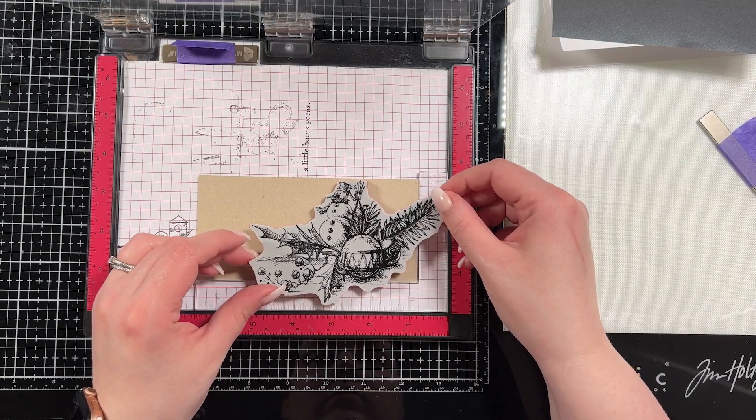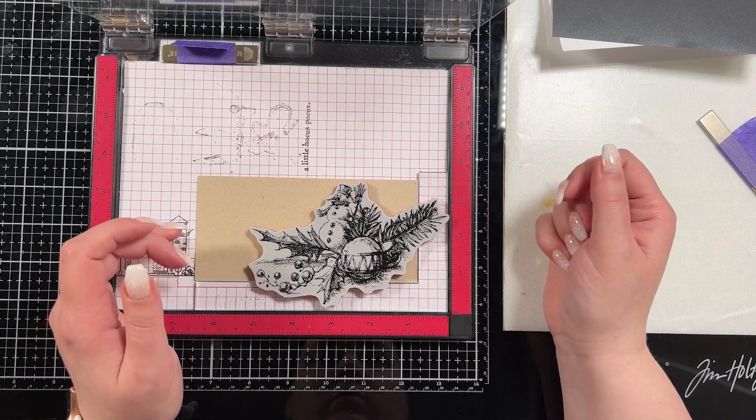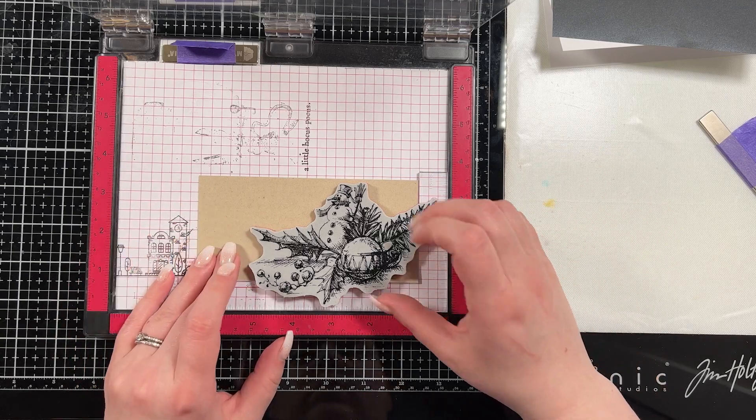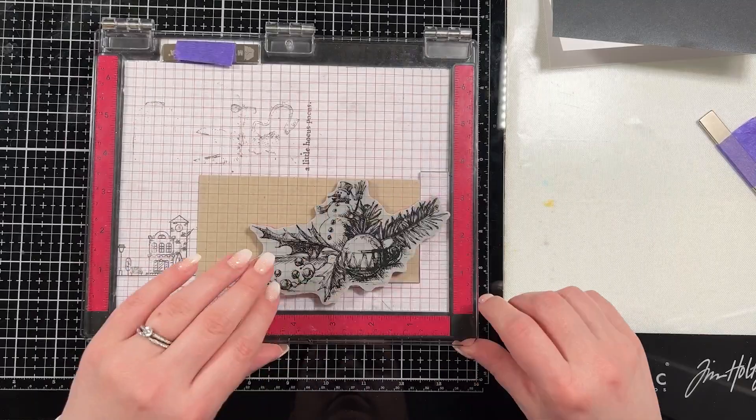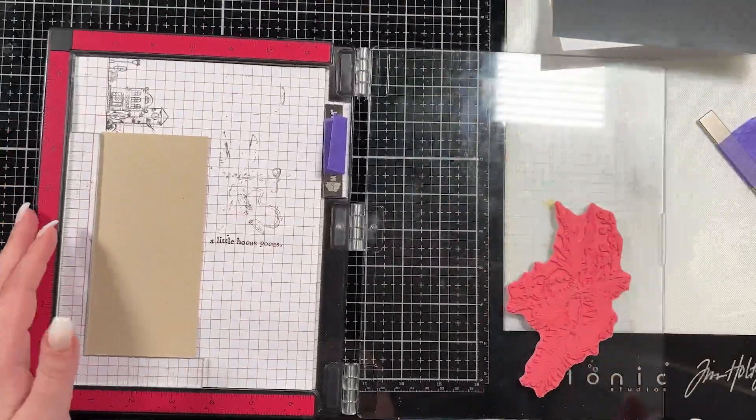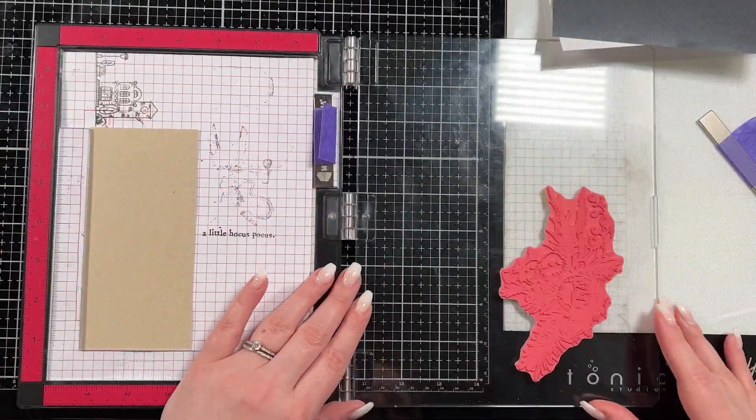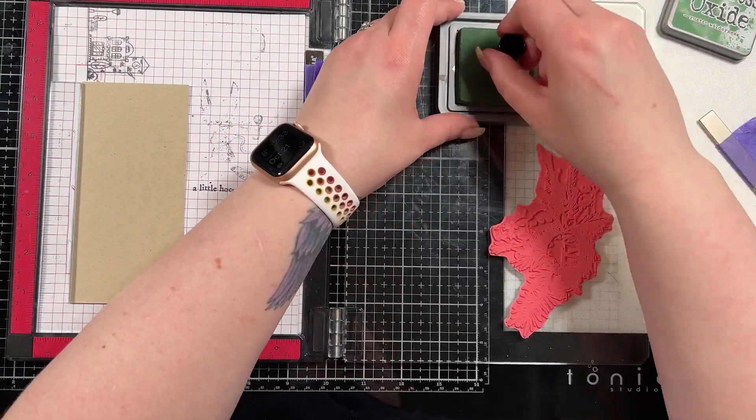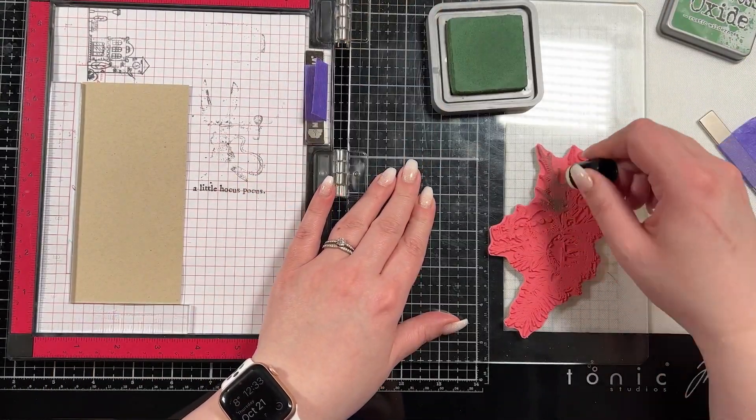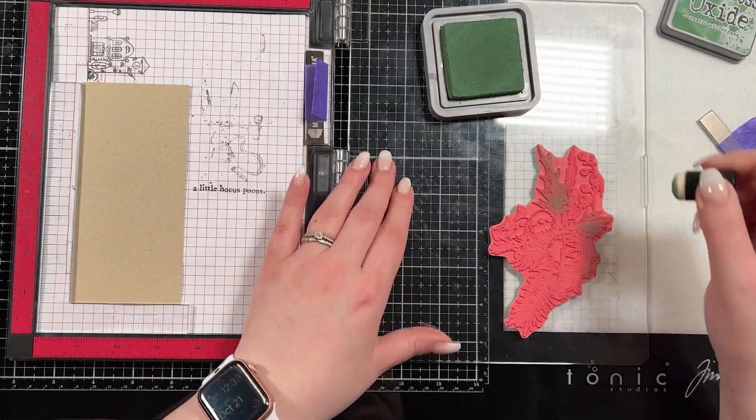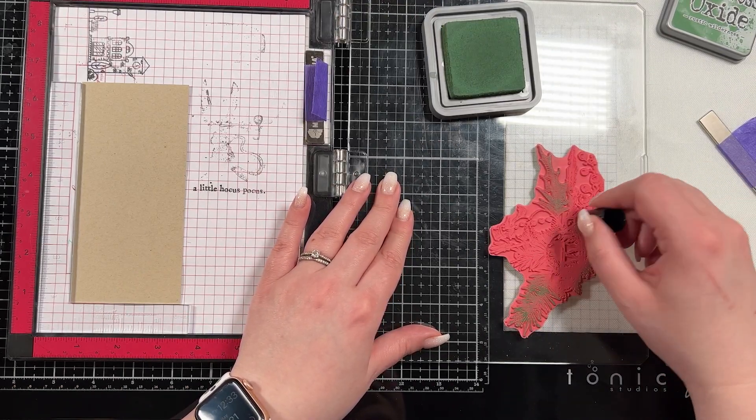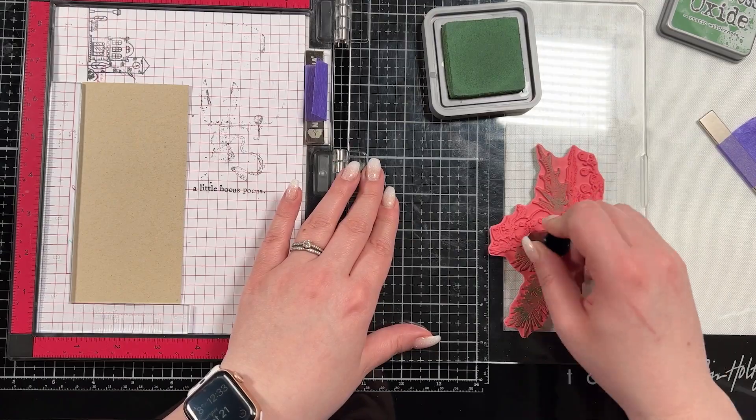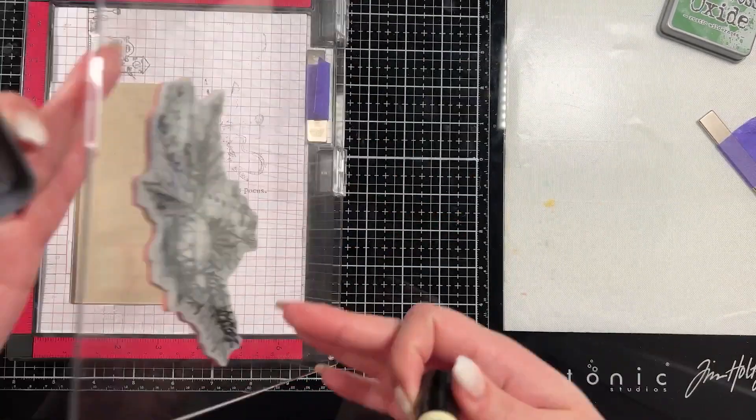So here I have Tim Holtz's Cozy Winter, I believe is the name of the stamp set. Yeah, Cozy Christmas, sorry. And I'm going to use both images. I'm going to show you this on this one with a little snowman. Because for the second card, I do the exact same techniques. So I have a finger dauber. And I have a few different colors of distress oxide ink. I have rustic wilderness, and I believe salvage patina is next, antique linen, candied apple and vintage photo.